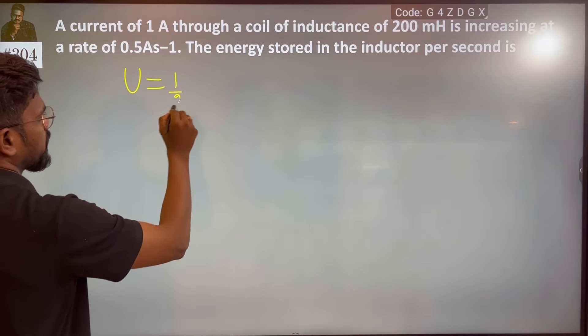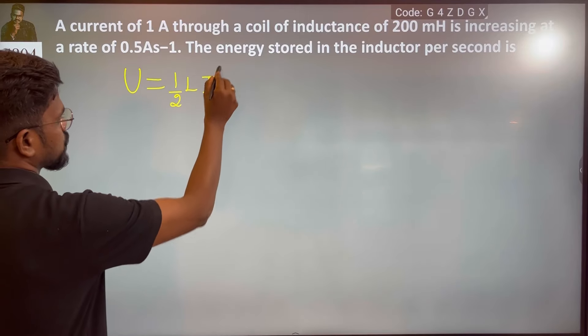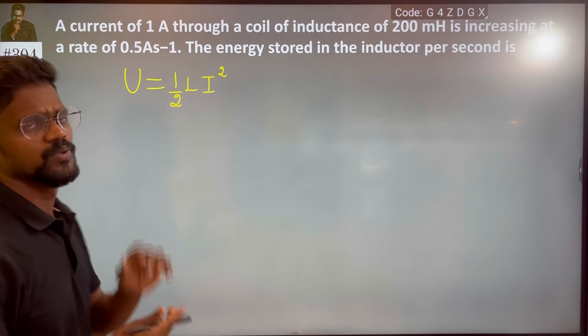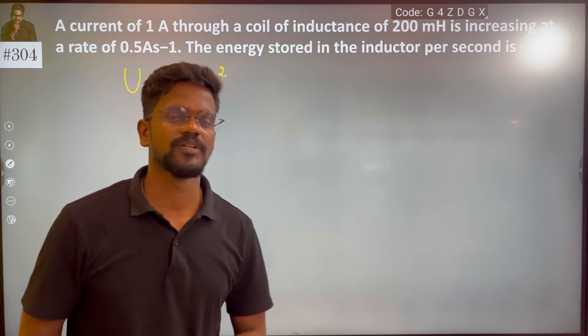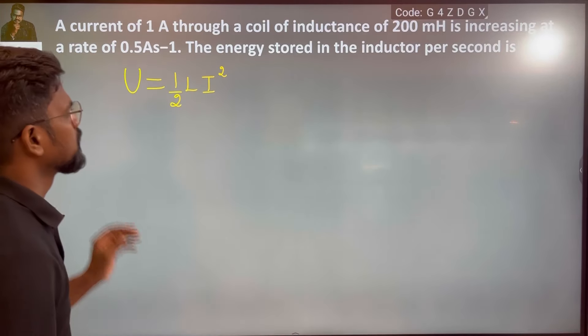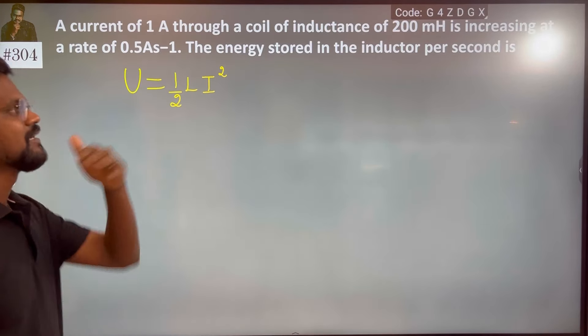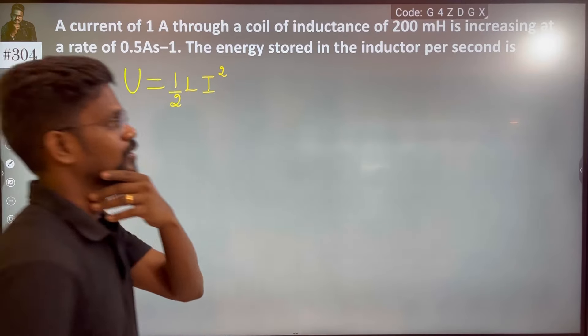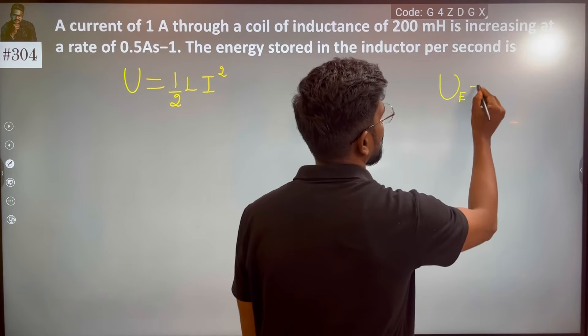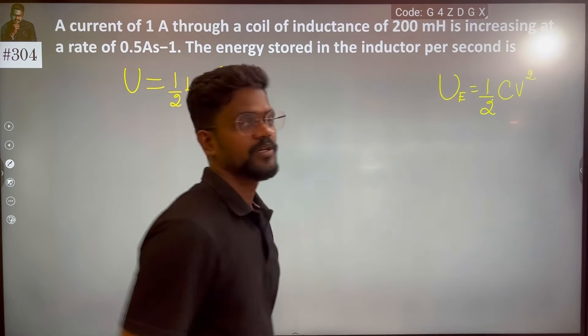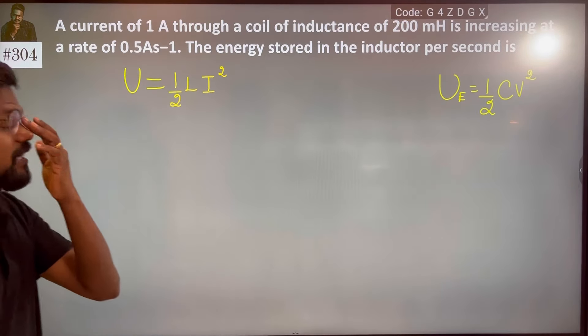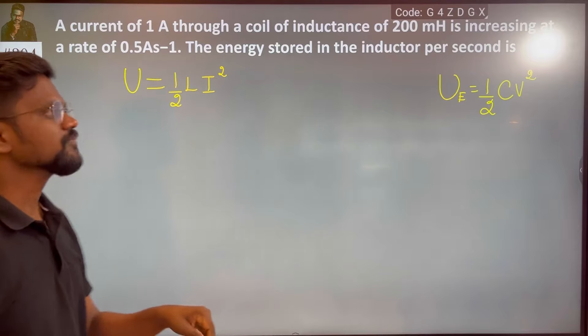Use nothing but 1 by 2 L I square. Self-inductance concept in the equation. The same way we are going to discuss here. This is the capacitor. Just a reminder. 1 by 2 C V square. Capacitor is inductor L I square. Fine?